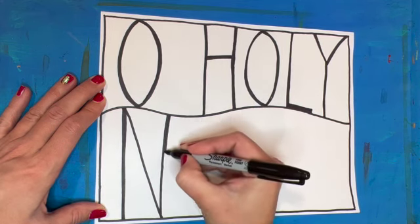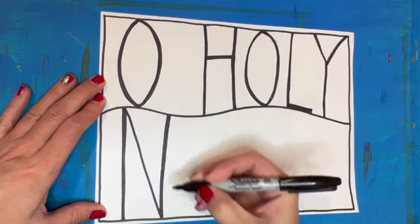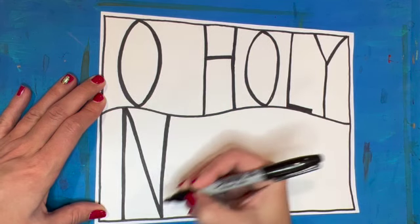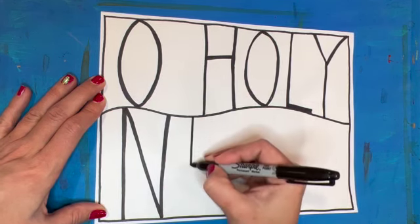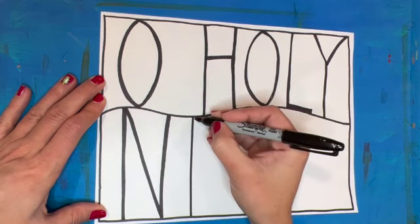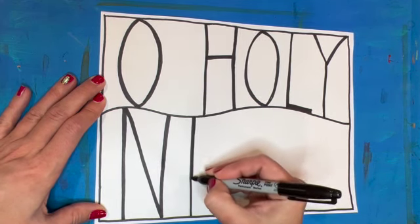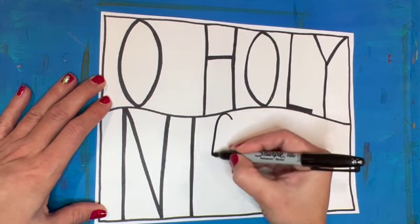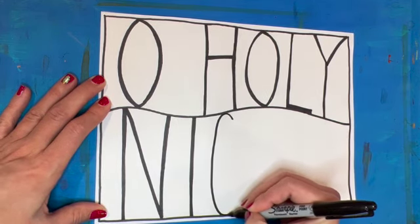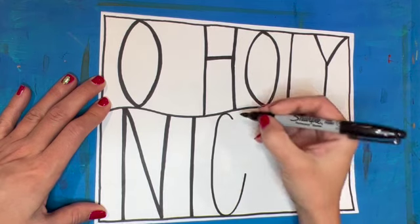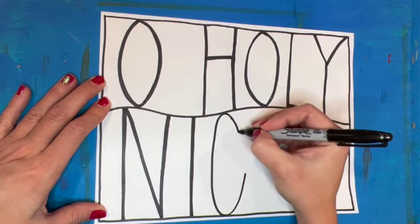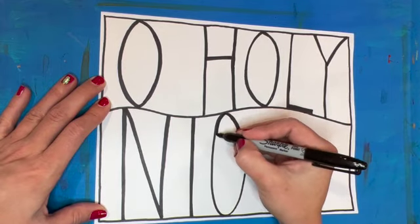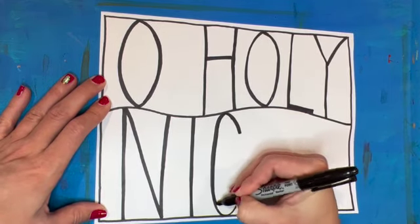Now I am adding the word Night along the bottom section of my paper. I'm also making sure to keep these letters nice and thick. Each letter does need to touch the top line and the bottom line. This way they will be dividing up the sections that I will be coloring later on.